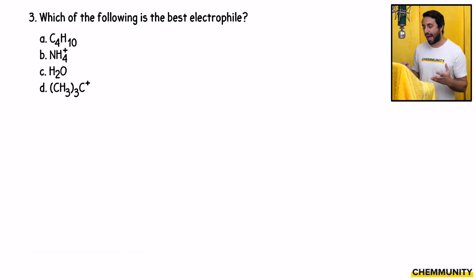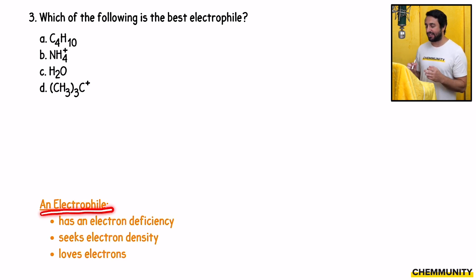Number three asks, which of the following is the best electrophile? So whereas a nucleophile is something that has a lot of electron excess, an electrophile is something that has an electron deficiency. So it seeks electron density to coordinate to it. Electrophile, phile meaning love, loves electrons, wants electrons to come coordinate to it.